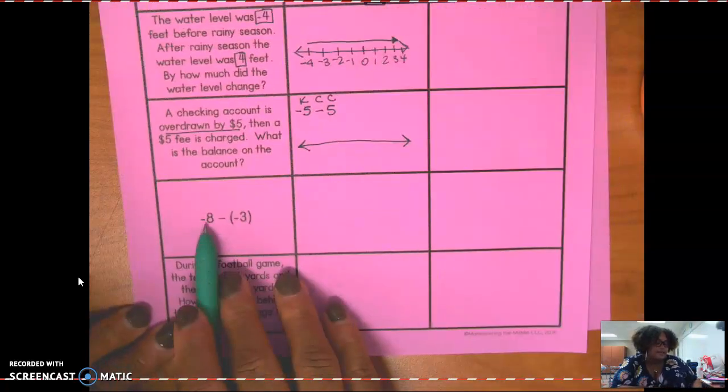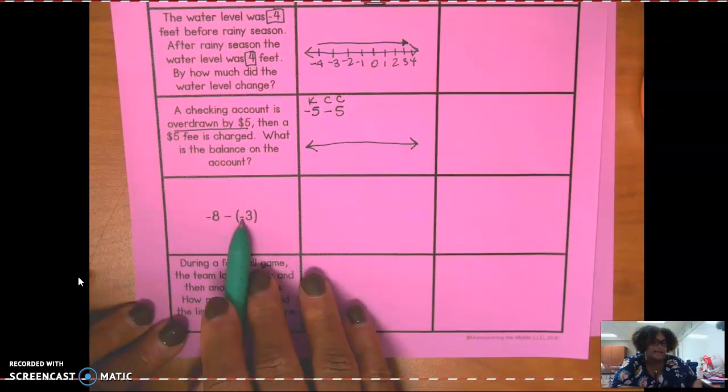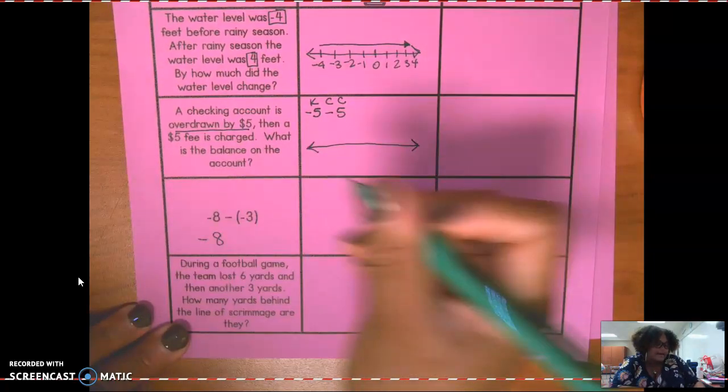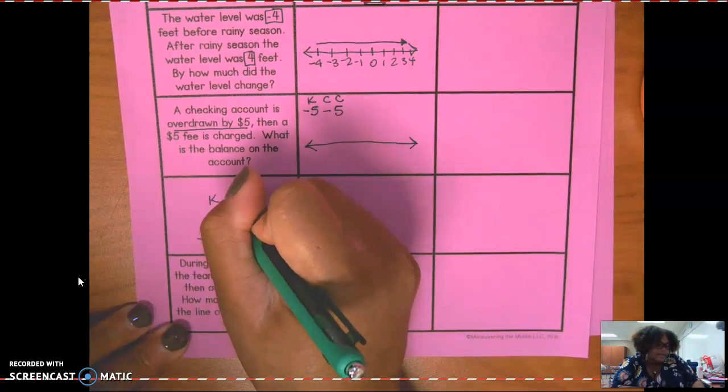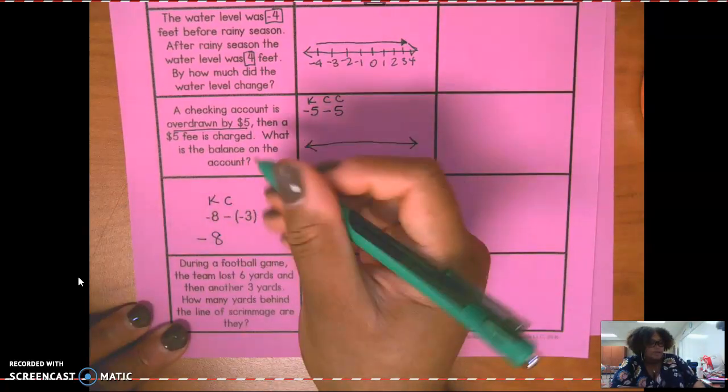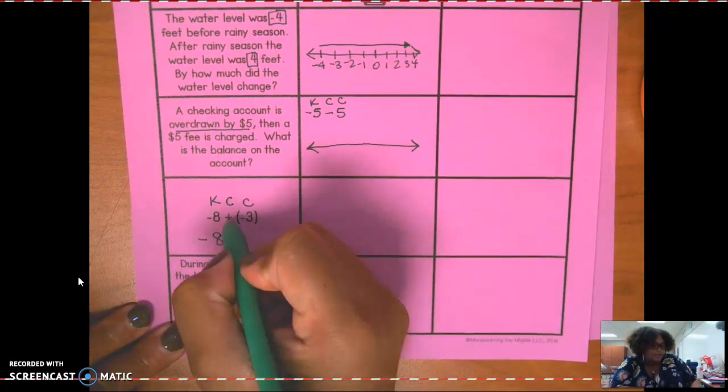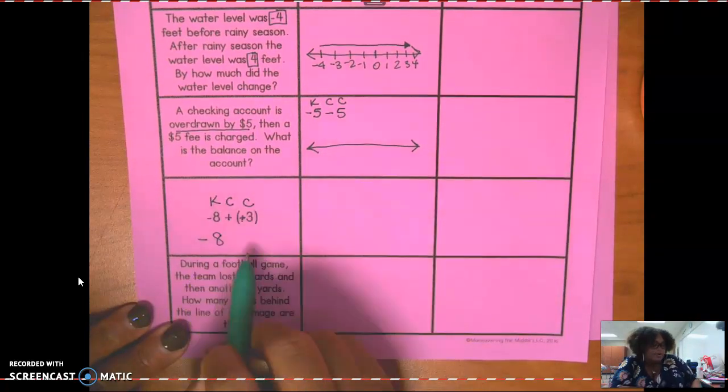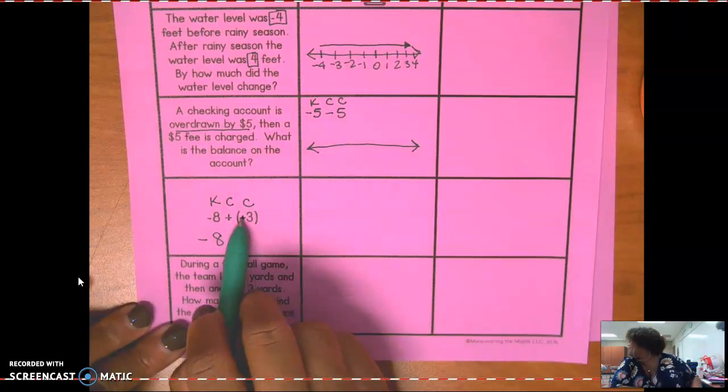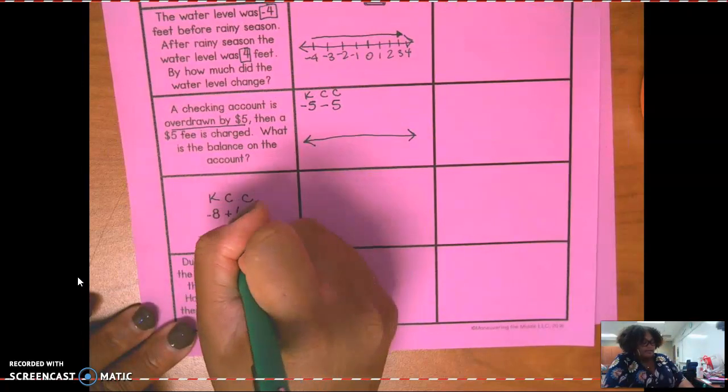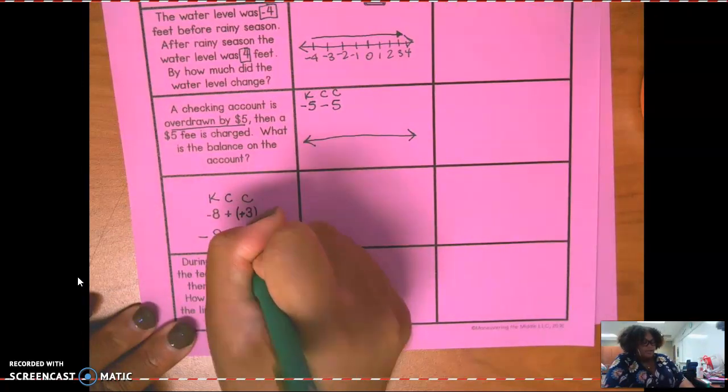The next one says negative eight minus negative three. You need to write negative eight. And then I have to do what? Say it again. Keep change change. So this is going to be plus and plus. Remember, do I need to put a positive sign in front of a positive number? No. So I can just put negative eight plus three.